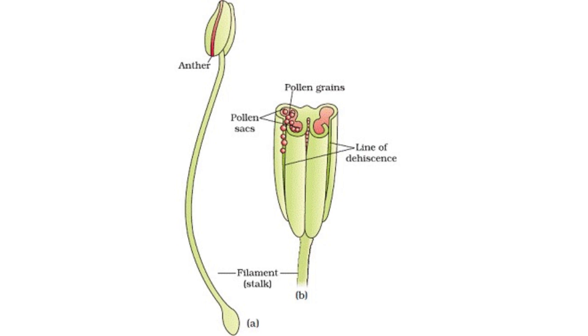The steps. One: pollination — pollen grains land on the stigma, either from the same flower, self-pollination, or another flower, cross-pollination, which is preferred for genetic diversity.